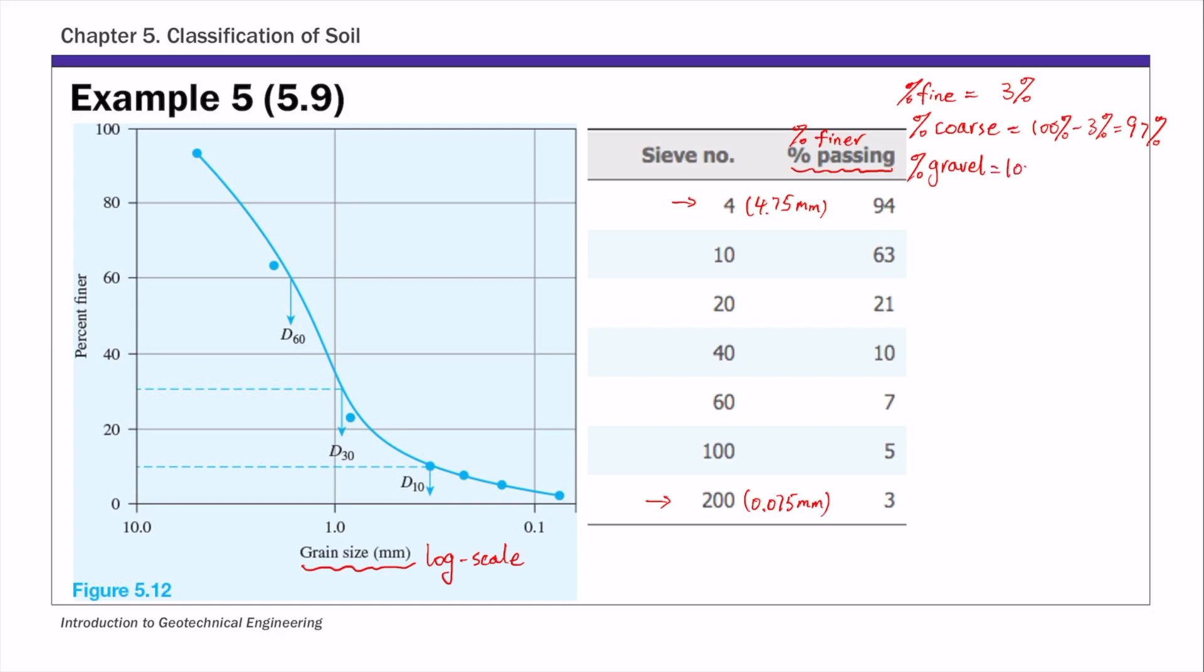It's going to be 100 percent minus the percent passing number 4, which is 94 percent. The difference is the percent retained on or above number 4, so that's the percent of gravel, 6 percent. And then the percent of sand is the difference between coarse and gravel. So 97 percent minus 6 percent equals 91 percent.